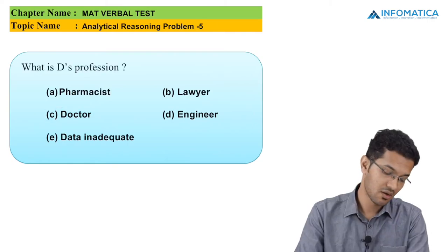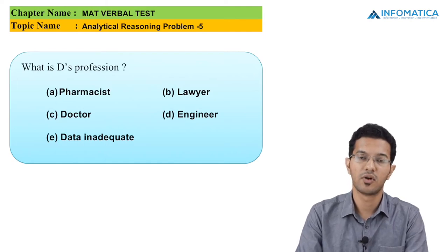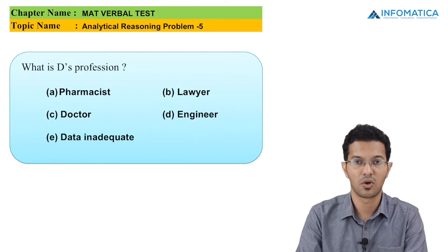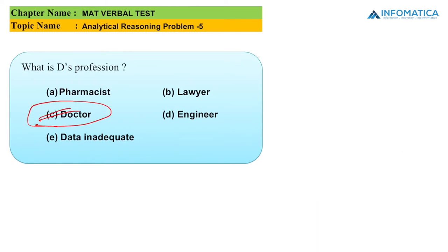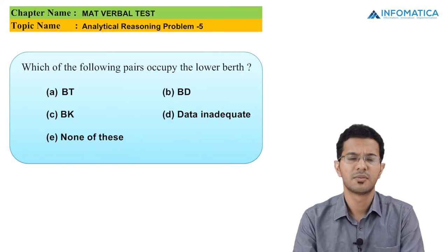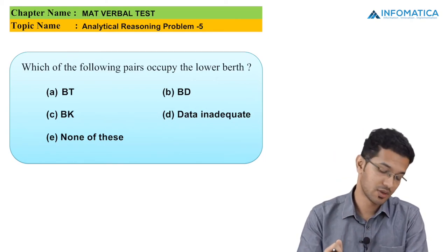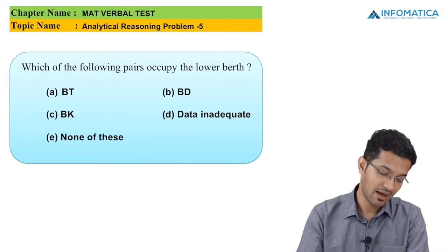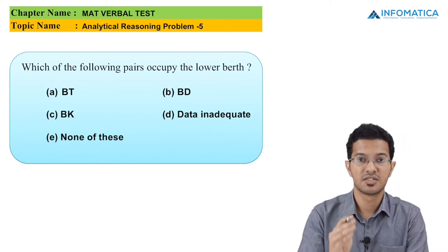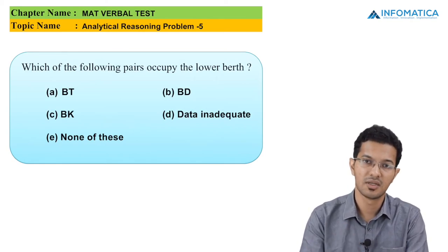The next question asks what is D's profession. From the table, D is a doctor. The following question asks which pair occupies the lower berths. From the table, B and R occupy the lower berths, but since B and R is not among the given options, the answer is none of these, which is option E.